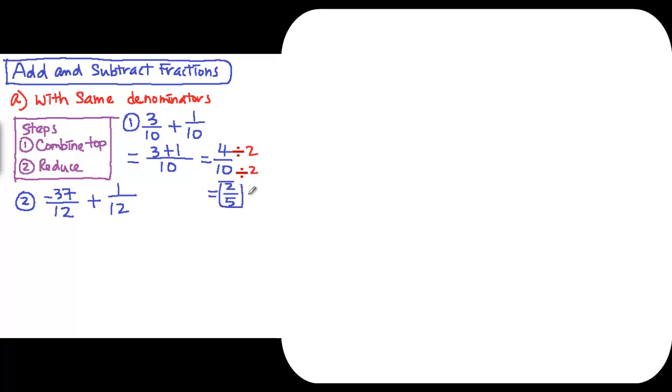Your answer for fraction should always be the lowest term or the simplest form. The second question is -37/12 plus 1/12. Again, we have the same denominator.